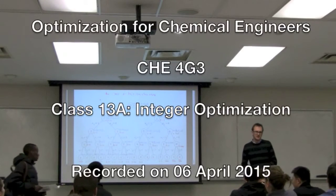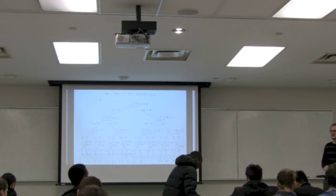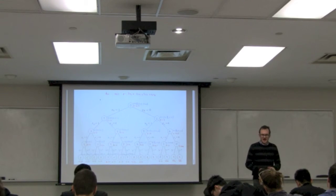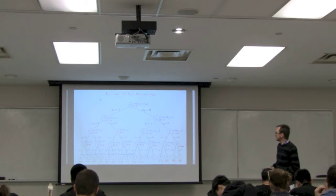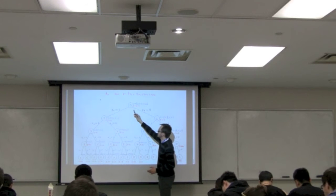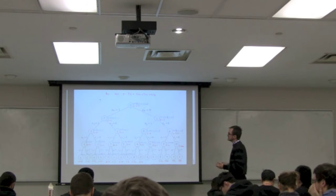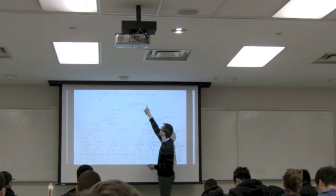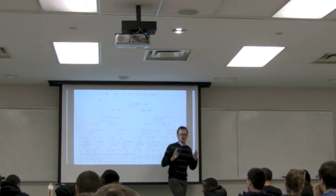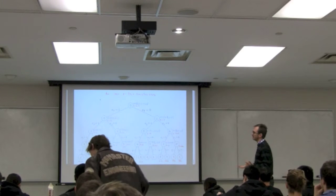Good morning everyone. Just before we get to the class notes, we have one tiny section to wrap up from last class. We ended off at node 0 where we branched, with the rule that we always branch on the non-integer variable when we solve the relaxed problem. So 0.44 there is variable x4, and our rule was that we would pick one of the two — in our case we chose to branch on the value of one.